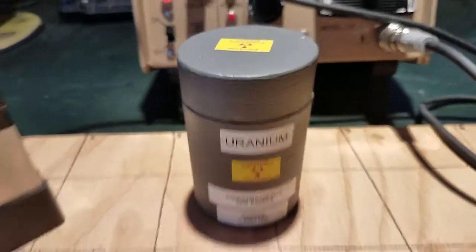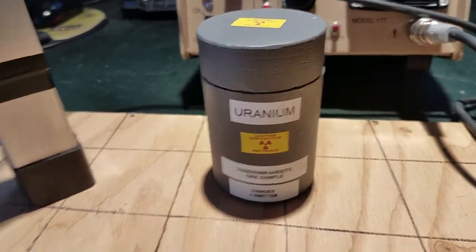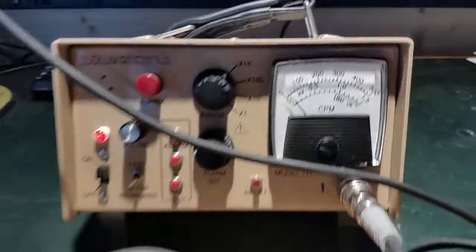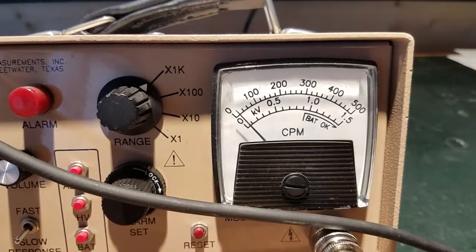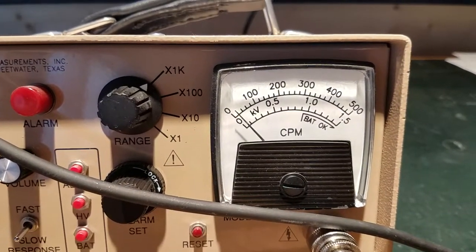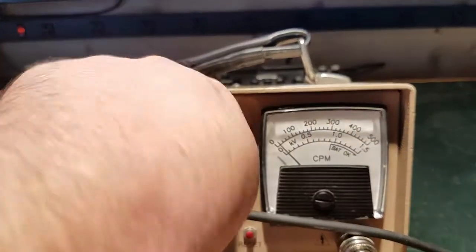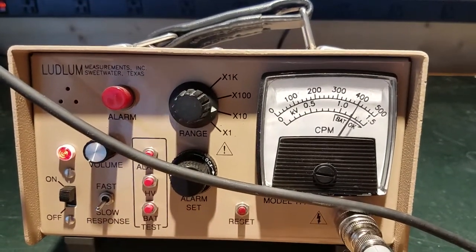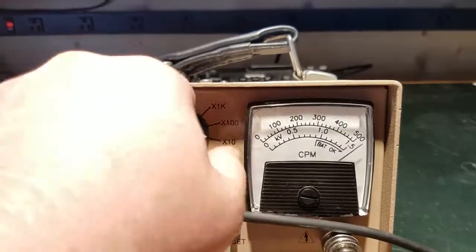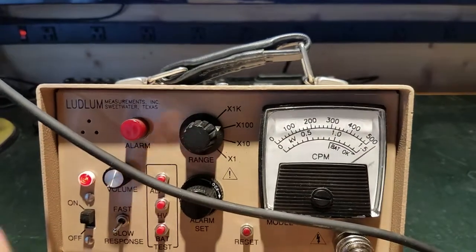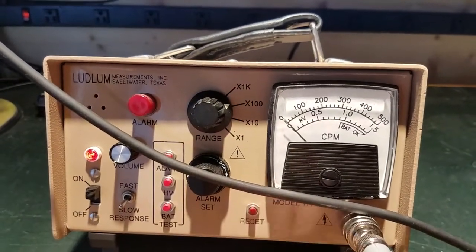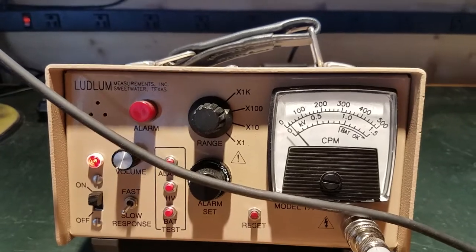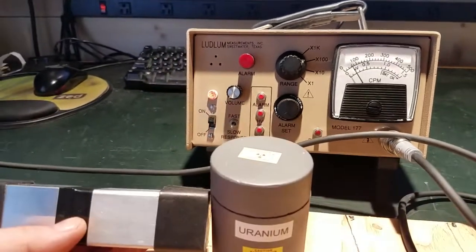Okay. So I've got the uranium ore sample. It's in a lead pig currently. And with the unit set on x1000, you can see that there's a little bit going on. So we'll just drop it down to the bottom, or to the x10 scale. Yeah, that's gonna be not, it's not good enough. So I'll do x100. Reset.